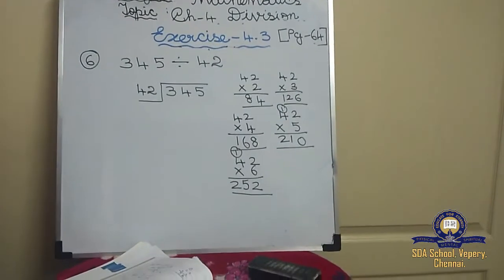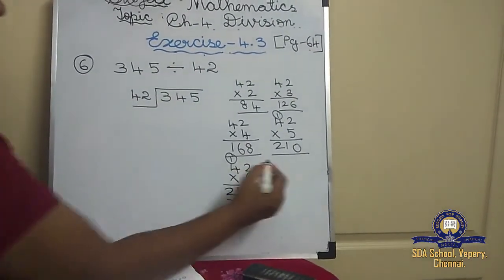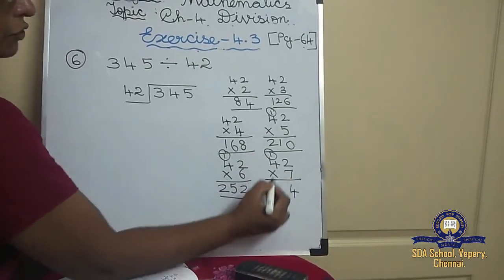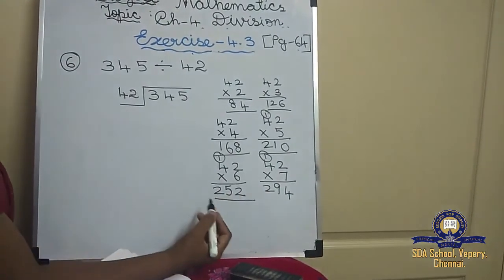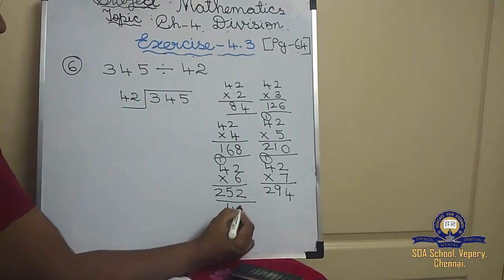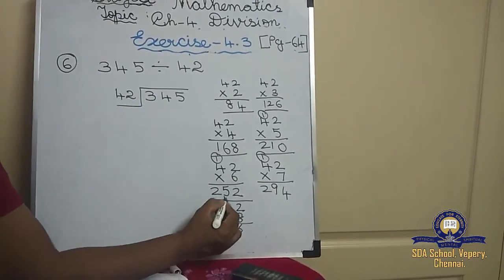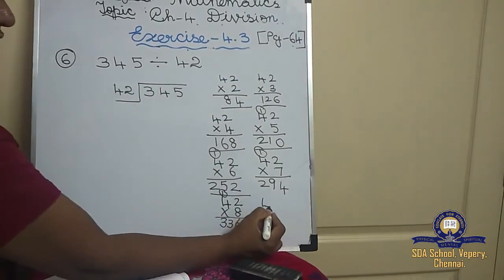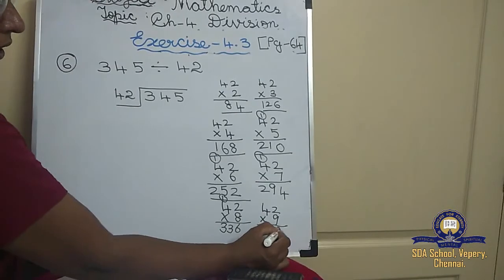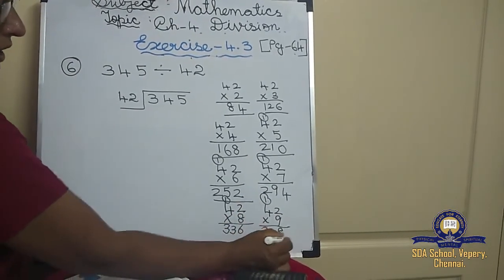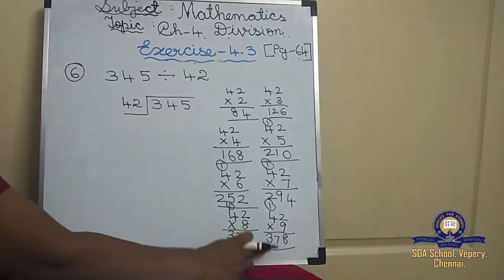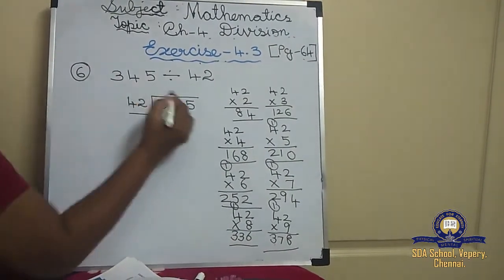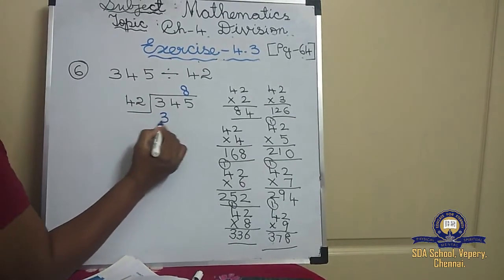42 sevens — 7 twos are 14, 7 fours are 28 plus 1 is 29, so 294. 42 eights — 8 twos are 16, 8 fours are 32 plus 1 is 33, so 336. 42 nines — 9 twos are 18, and 37 is coming, so 378. But the dividend is 345 — 378 exceeds it, so write the before number: 42 eights are 336.